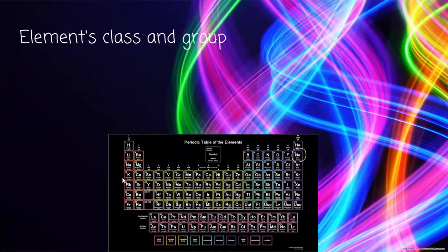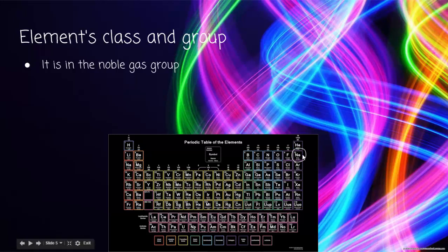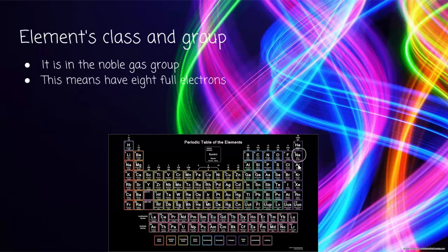The element's class and group: Neon is in the noble gas group. On the periodic table we start with the alkali metals, then alkali earth metals, and then the groups named after what they are — boron, carbon, nitrogen, oxygen — and then the noble gases. As said in previous slides, Neon has 8 full electrons, so there's no need for it to gain more, which is why it's not reactive.